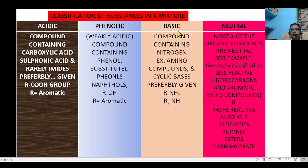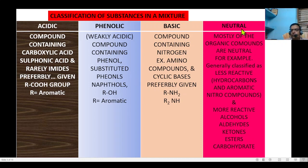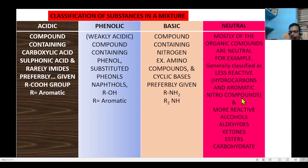The third category is compounds containing nitrogen, which are generally called basic. The compounds which contain RNH2 (primary amine) or R2NH (secondary amine) may be given in this category. The fourth category is neutral substances. Most organic compounds are neutral in nature and are classified into two more sub-categories: less reactive neutrals such as hydrocarbons and aromatic nitro compounds, and more reactive neutrals such as alcohols, aldehydes, ketones, esters, and carbohydrates.